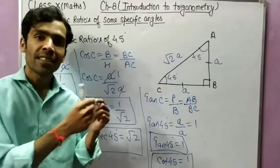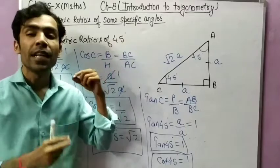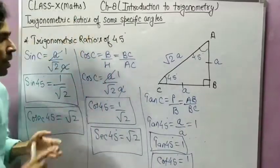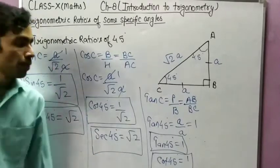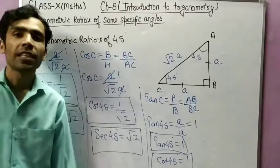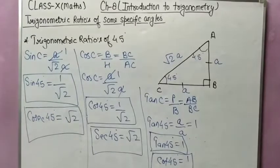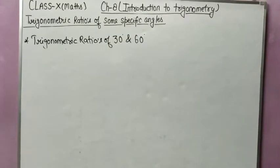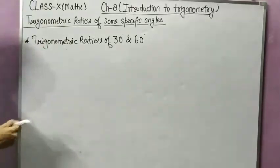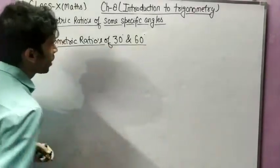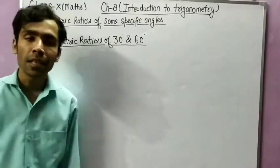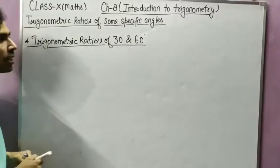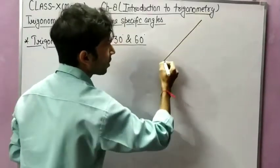The key point is that for 45 degrees, we take an isosceles right angle triangle. After this, I will tell you the trigonometric ratios of 30 degrees and 60 degrees. For calculating trigonometric ratios of 30 and 60 degrees, we need to take an equilateral triangle. Suppose I have taken an equilateral triangle.